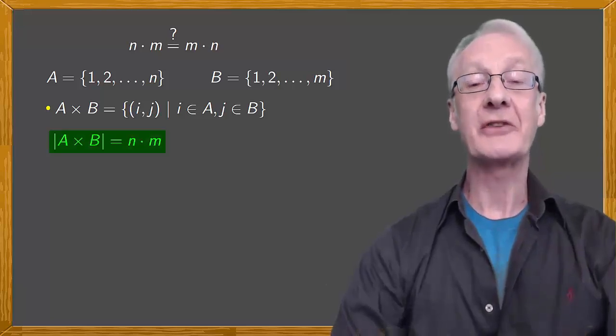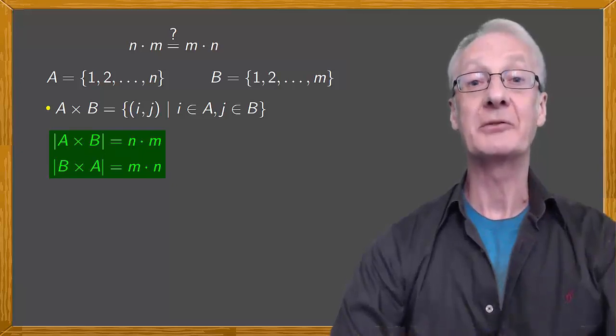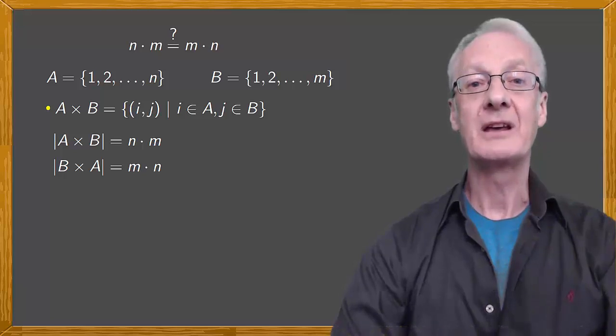The Cartesian product of A and B has the cardinality n times m, and in the same way the Cartesian product of B and A has the cardinality m times n. So if we can show that A times B has the same number of elements as B times A, we'll have shown that n times m is equal to m times n. If the two sets have the same cardinality, this means they're equal in size, that there's a bijection or one-to-one correspondence between the two. And this in fact is the case.